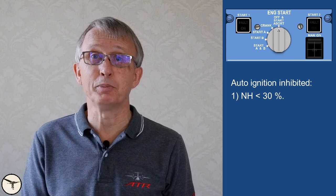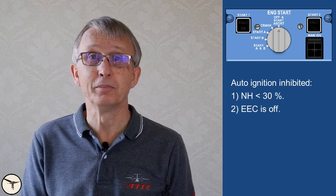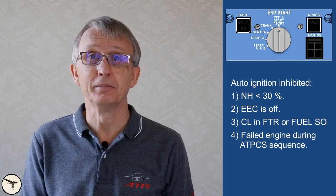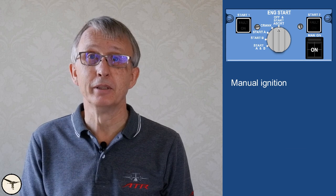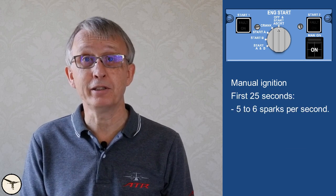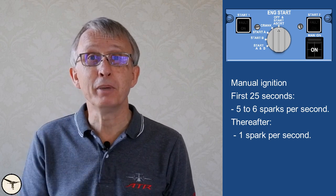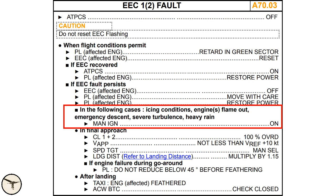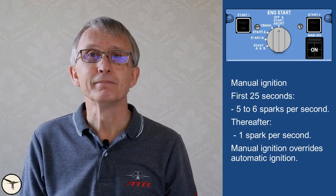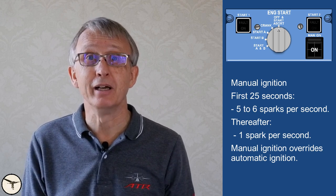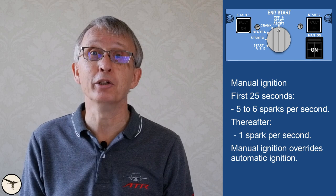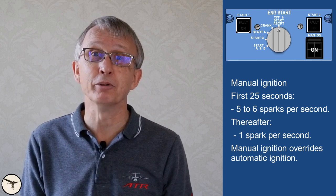Some ATR 72s have a modification where igniters are only activated when continuous relight is selected and NH drops below 66%. All ATR-A variants have automatic ignition — when the engine is running and NH drops below 60%, both igniters are activated at 5 to 6 sparks per second for the first 25 seconds, then 1 spark per second. Automatic ignition is inhibited when NH drops below 30%, EEC is selected off, the condition lever is in feather or fuel shutoff, or on the failed engine during an ATPCS sequence. Manual ignition overrides automatic ignition and must only be used per checklist — for EEC fault, ice ingestion, engine flameout, emergency descent, severe turbulence or heavy rain. If manual ignition has been on for more than 25 seconds at the time of a flameout, it gives only 1 spark per second rather than 5 to 6, potentially delaying automatic relight.